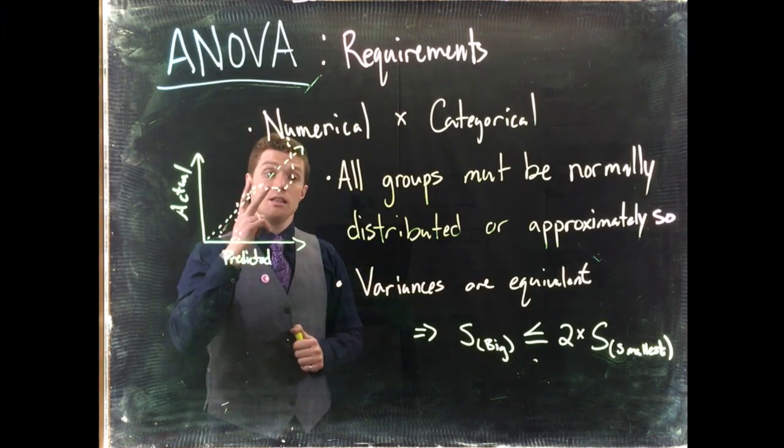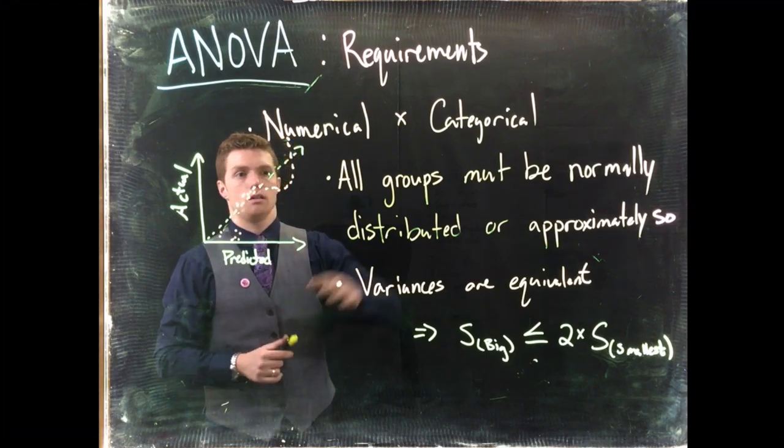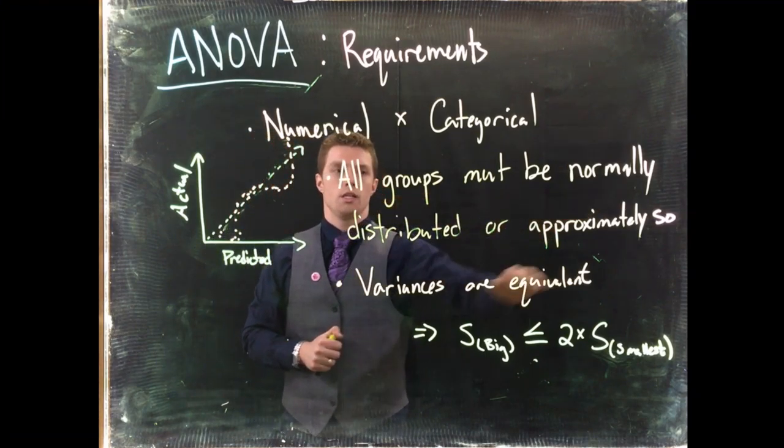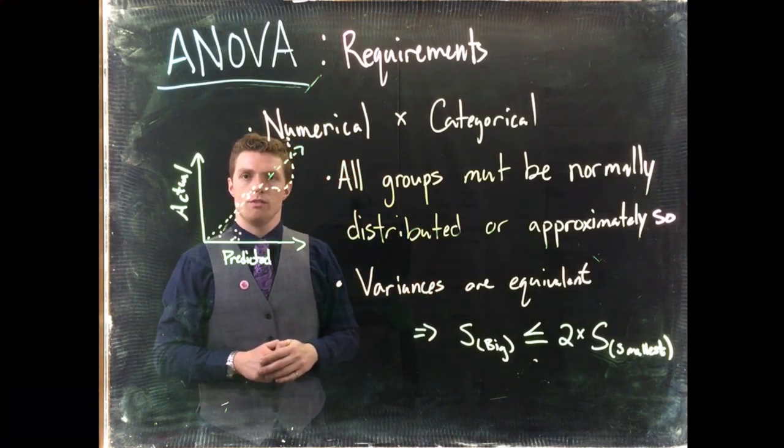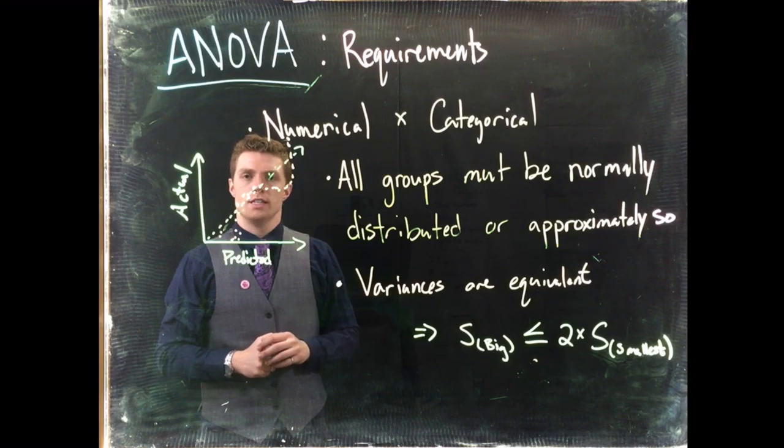So we need these two requirements. Okay, so all groups must be normally distributed or approximately so, and the variances need to be equivalent before we can go ahead and do our ANOVA testing.